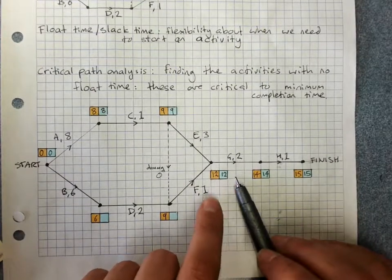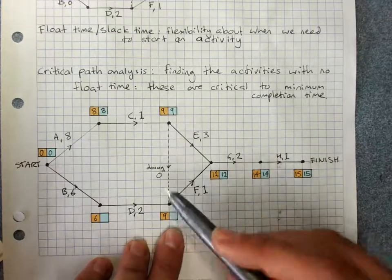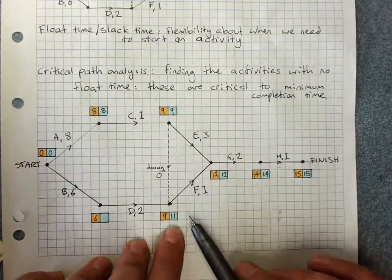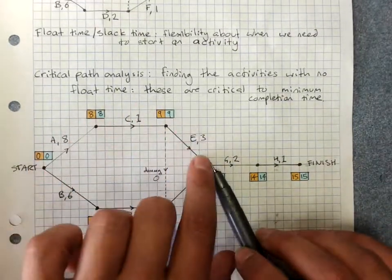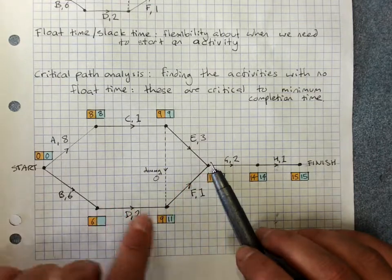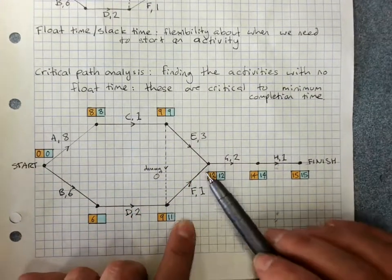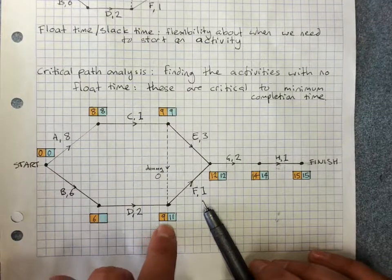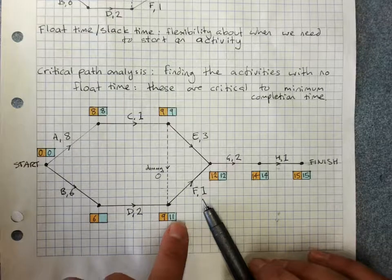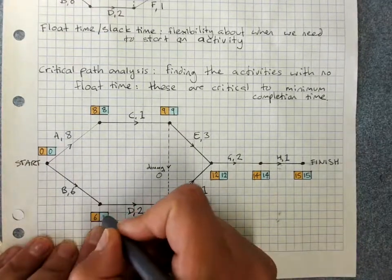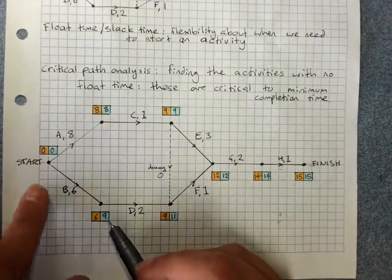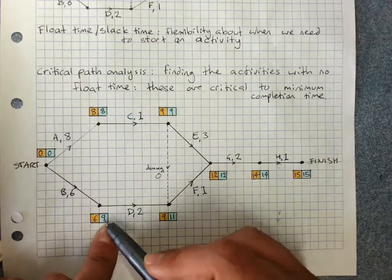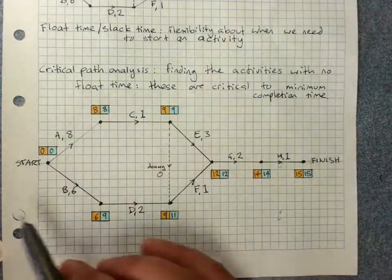12 in the blue box, take away 1. The latest I can finish D is, 12 minus 1, 11 hours in. That's because it's going to take me 12 hours to get to here this way. So that float time says I could wait and finish D at 11. I'd finish F at 12 days in. Sorry about the days and hours messing up again. So there's some slack time here when these numbers are different. So I'm going to go ahead. Tracking back, 11 take away 2 hours to do D. The latest I can finish B is at 9 hours in. So the earliest I can start D is at 6 hours in. The latest I can finish B is at 9 hours in.